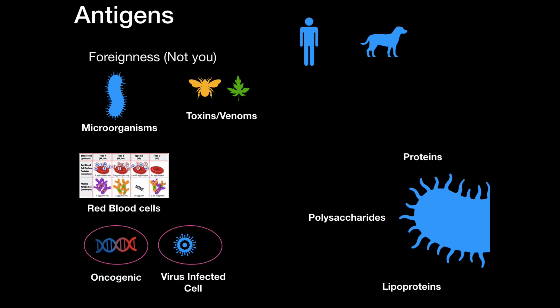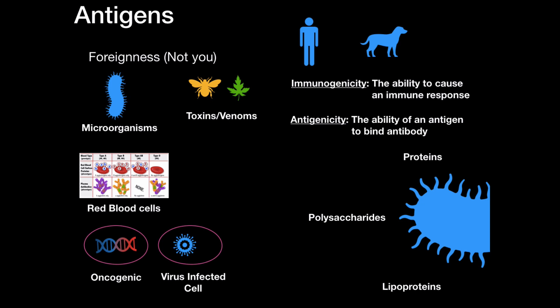There are two words that are important to remember when it comes to antigens. The first one is immunogenicity, meaning the ability to cause an immune response. Proteins are very immunogenic because their ability to cause an immune response is very high. Another word is antigenicity, meaning the ability of an antigen to bind to the antibody.